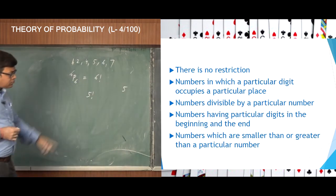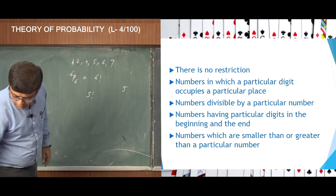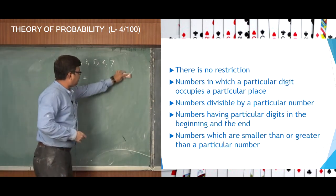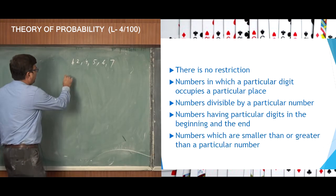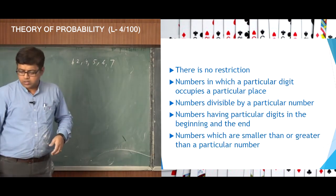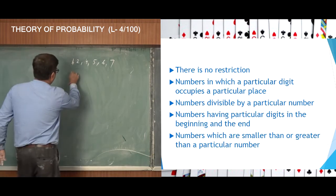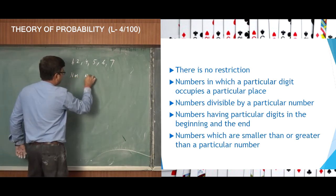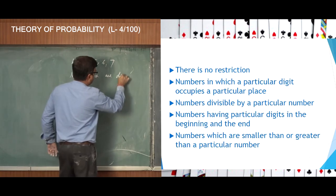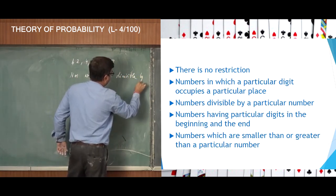The third case is numbers divisible by a particular number. Let us say I want to find numbers which are divisible by 2.